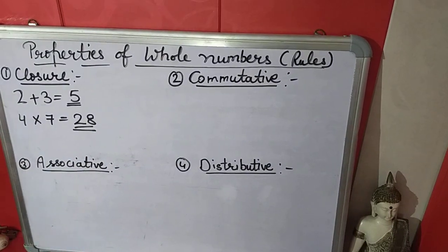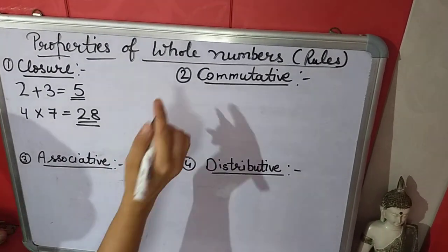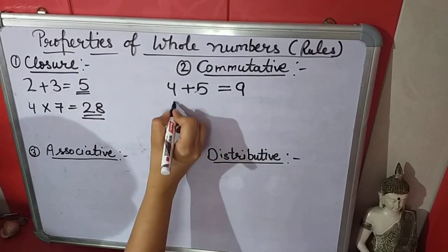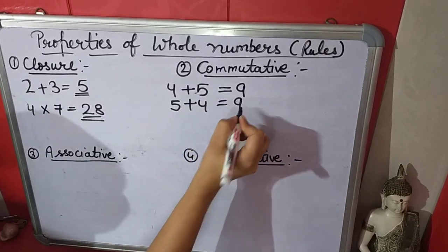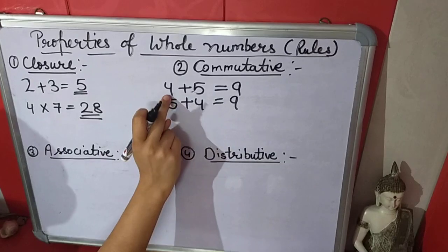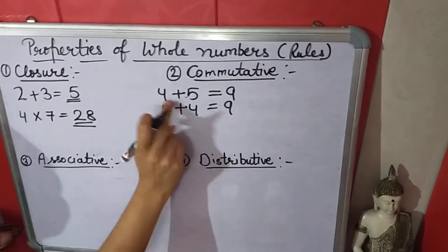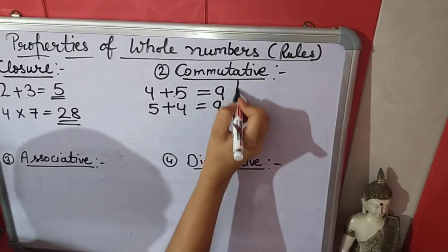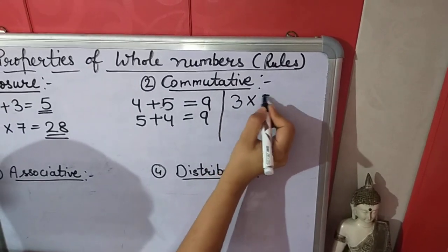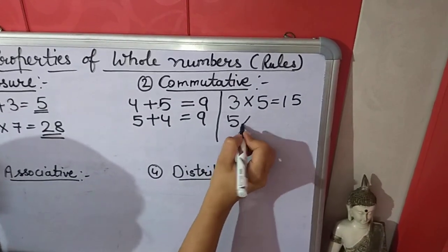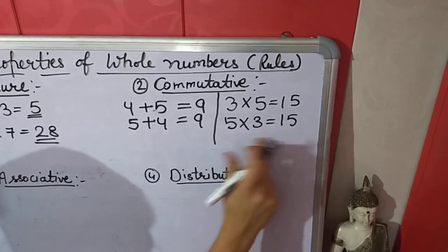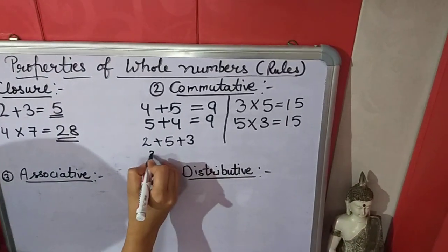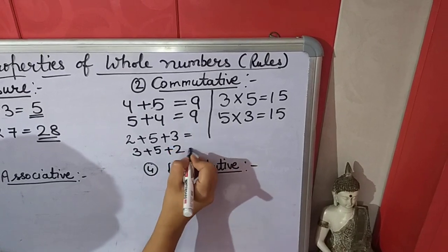Now commutative property. In commutative property, if we add any 2 numbers in any order, the result will be the same. For example, 4 plus 5 is 9. If we change the order: 5 plus 4 is also 9. That is the commutative property of addition. Similarly for multiplication, if we multiply any 2 numbers in any order and change the order, the result will be the same. This also applies to 2 or more numbers, like 2 plus 5 plus 3 — changing the order gives the same result.